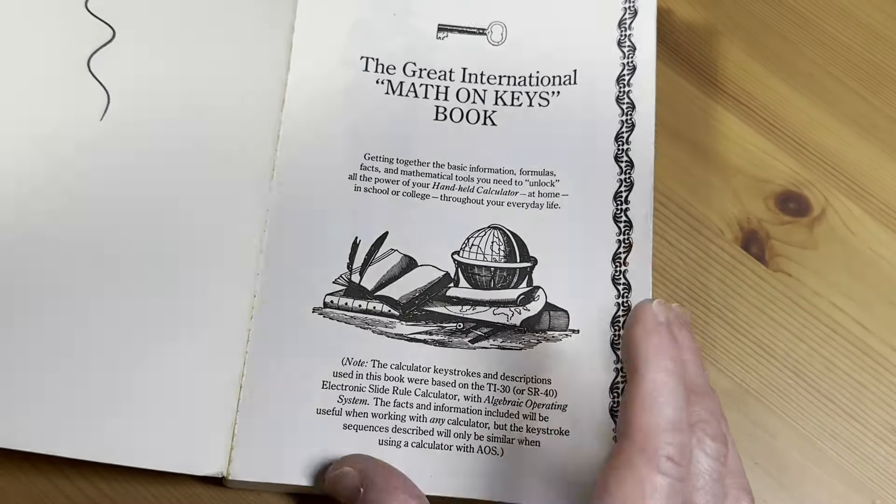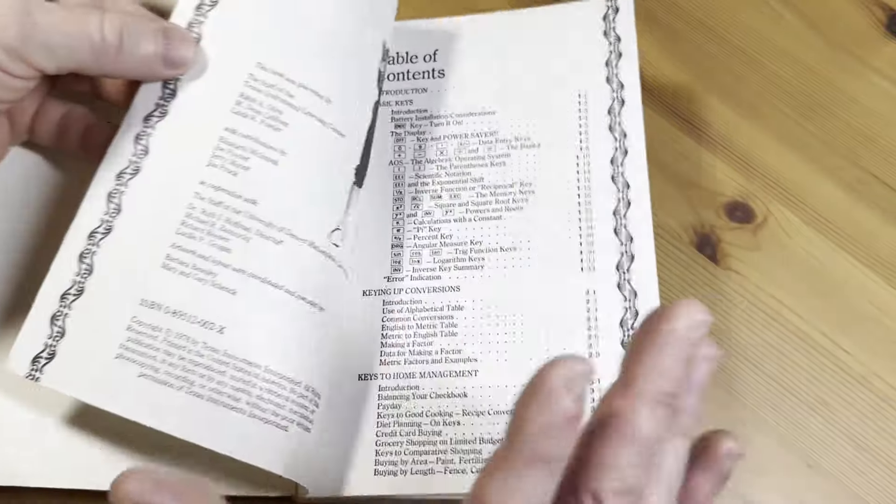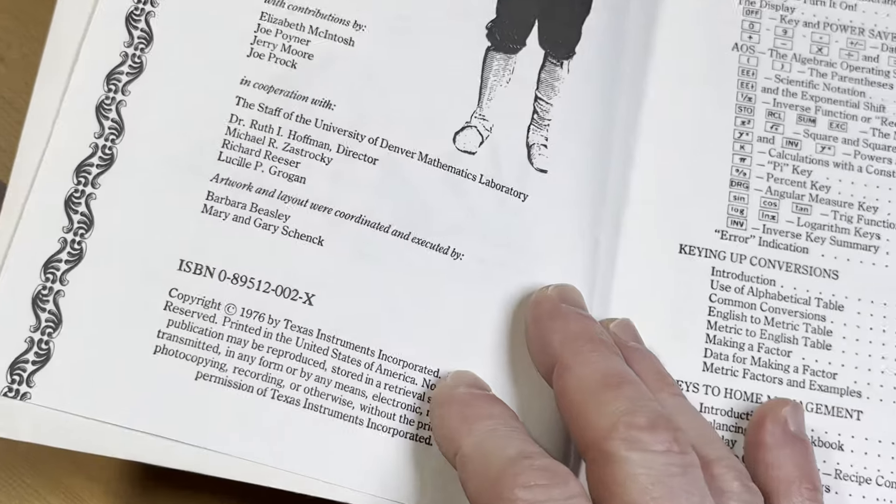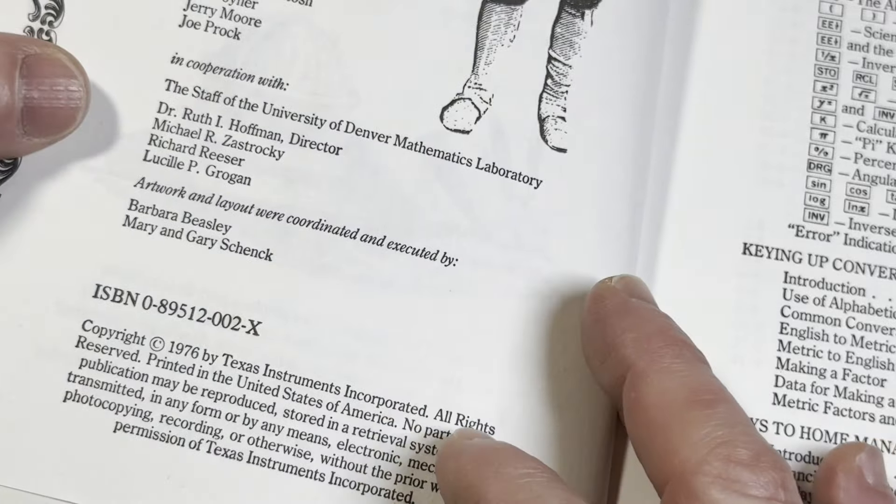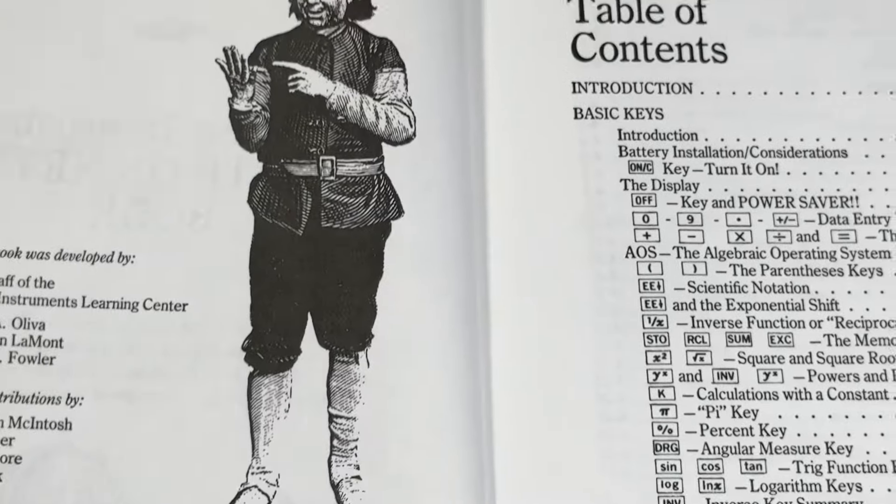It's really for calculators that are older, right? This is an older book. Look at the copyright here. Look at this. 1976. This is the first edition. I don't know if there are more editions.